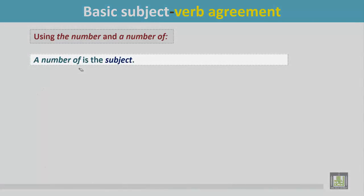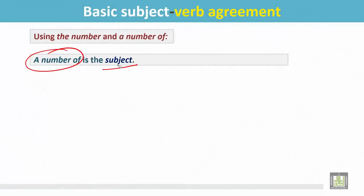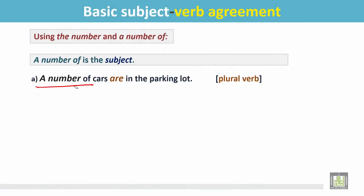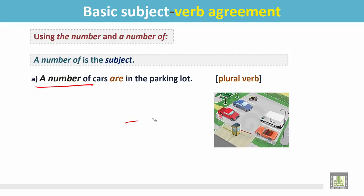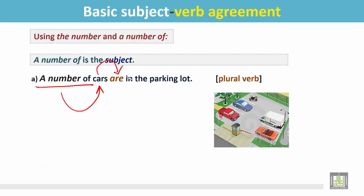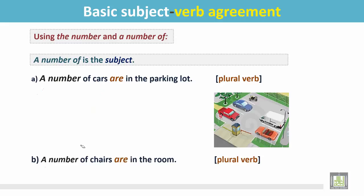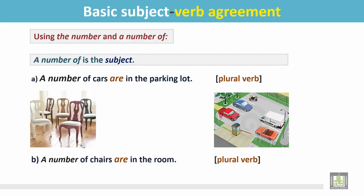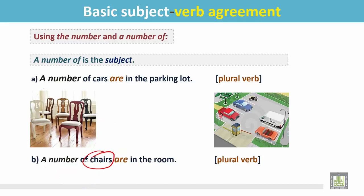When 'a number of' is the subject, we use it as the subject of a sentence. Example: 'A number of cars are in the parking lot.' In this picture we see there are several cars in the parking. 'A number of' usually mentions a plural number, so the verb is plural. See another example: 'A number of chairs are in the room.' There are many chairs. 'A number of' usually means plural — several or many — that's why the verb is plural: 'are.'